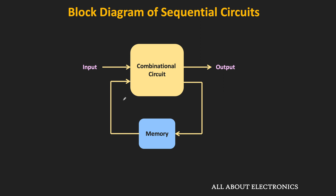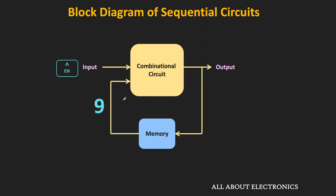Relating this to our earlier example: when we press the channel-up button, that is the input. If channel 8 is stored in memory, the combinational circuit increments that number by 1, making the new output 9, and that number is now stored in memory. So when the channel-up button is pressed next time, the output will be 10, because 9 is stored in memory. The output of a sequential circuit is a function of the present input as well as the current state of the memory.